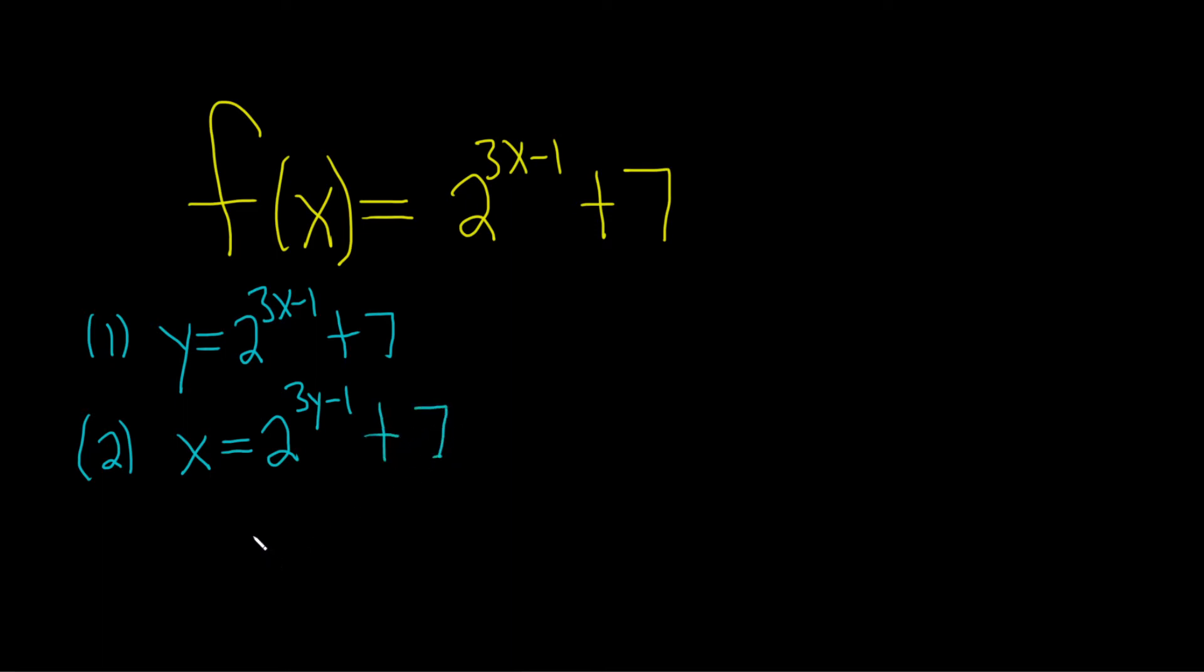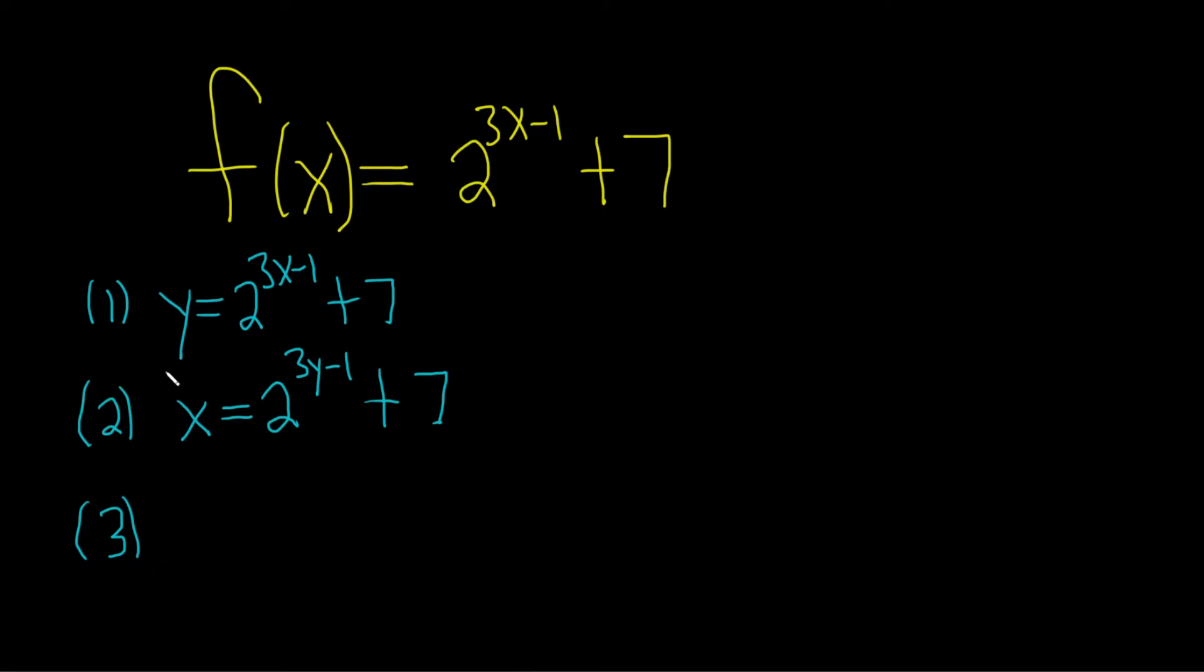The third step is to actually solve for y. To solve for y, we'll start by isolating the exponential term by subtracting 7. Minus 7 from both sides. These cancel. So we have x minus 7 equals 2 to the 3y minus 1.